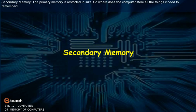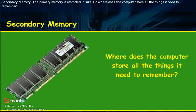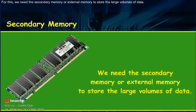Secondary Memory: The primary memory is restricted in size. So where does the computer store all the things it needs to remember? For this, we need the secondary memory or external memory to store the large volumes of data.